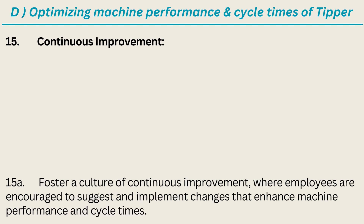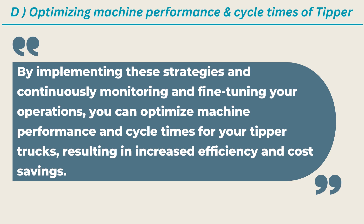15. Continuous Improvement: foster a culture of continuous improvement, where employees are encouraged to suggest and implement changes that enhance machine performance and cycle times. By implementing these strategies and continuously monitoring and fine-tuning your operations, you can optimize machine performance and cycle times, resulting in increased efficiency and cost savings.